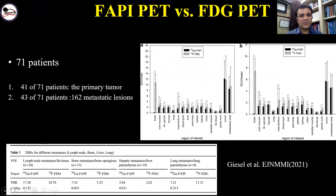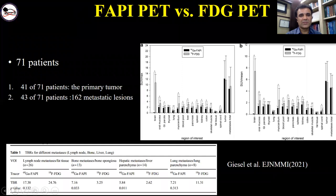Another interesting report recently published in the European Journal of Nuclear Medicine in 71 patients — 41 with primary tumors and 43 with metastatic lesions — showed that almost all background normal tissue organs have lower background uptake on FAPI compared to FDG, which may result in equal or higher tumor-to-background ratio for FAPI compared to FDG PET-CT.